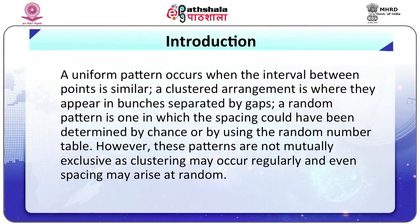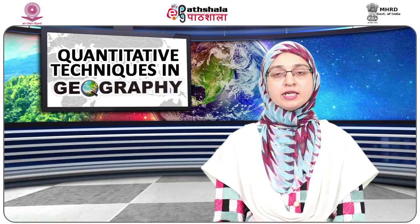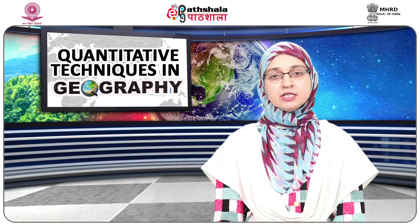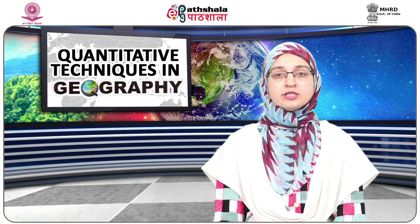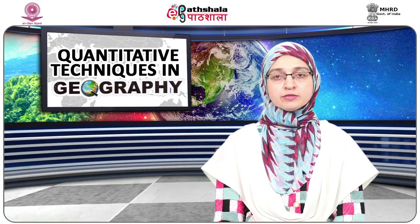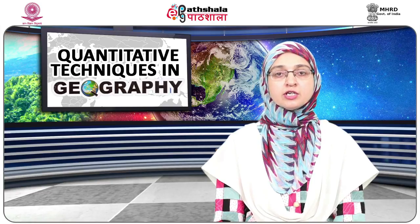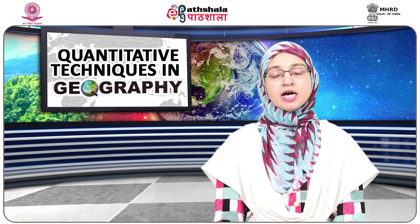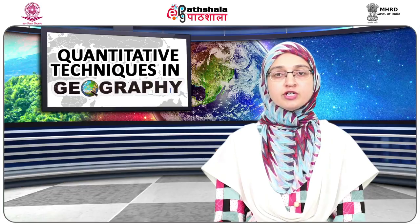A uniform pattern occurs when the interval between points is similar. A clustered arrangement is where they appear in bunches separated by gaps. A random pattern is one in which the spacing could have been determined by chance or by using a random number table. However, these patterns are not mutually exclusive, as clustering may occur regularly and even spacing may arise at random. Nearest neighbor analysis helps us understand these patterns which evolve over space because of different geographical factors.